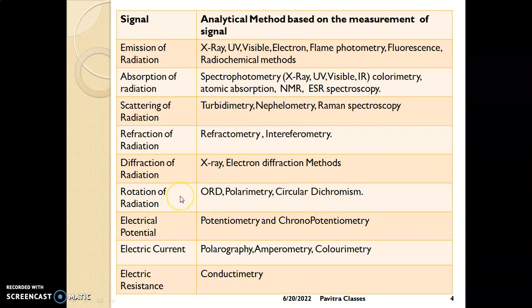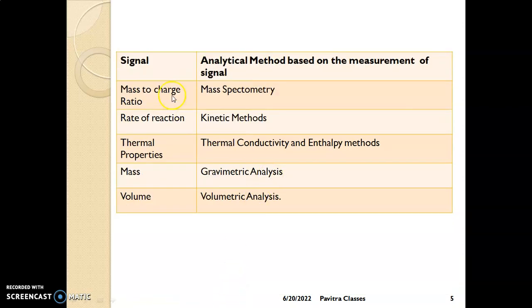Rotation of radiation is done in ORD, polarimetry, and circular dichroism. Electrical potential is measured in potentiometry and chronopotentiometry. Electric current is used in polarography and amperometry. Electric resistance is measured in conductimetry. Other signals include mass-to-charge ratio in mass spectroscopy, rate of reaction in kinetic methods, and thermal properties such as thermal conductivity and enthalpy. Mass and volume are measured in the ancient gravimetric and volumetric analysis methods.